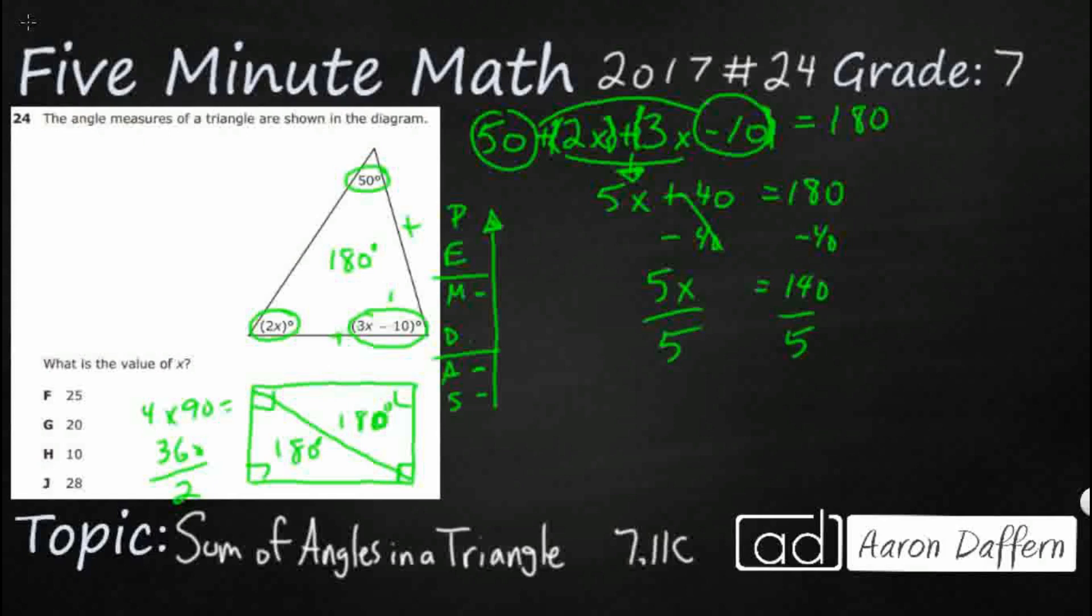That's a multiplication, so let's divide. And so we've got 5x divided by 5 just leaves you with 1x or just x. And let's see, what is 140 divided by 5? That's going to be 28. All right, so there we go. Our answer is going to be 28. x equals 28. The answer is J.